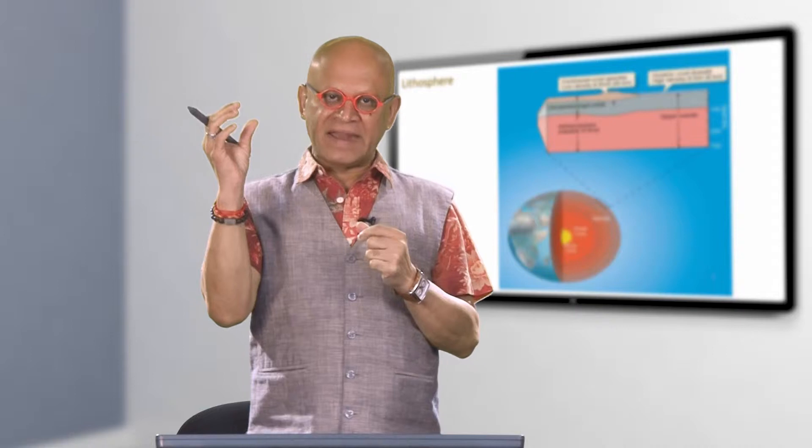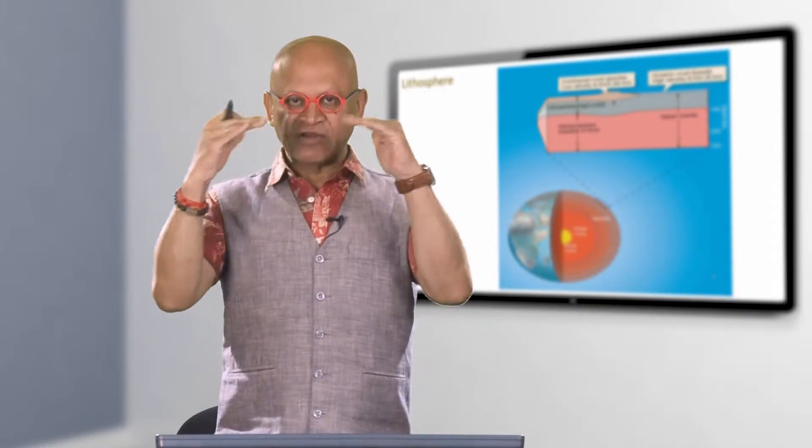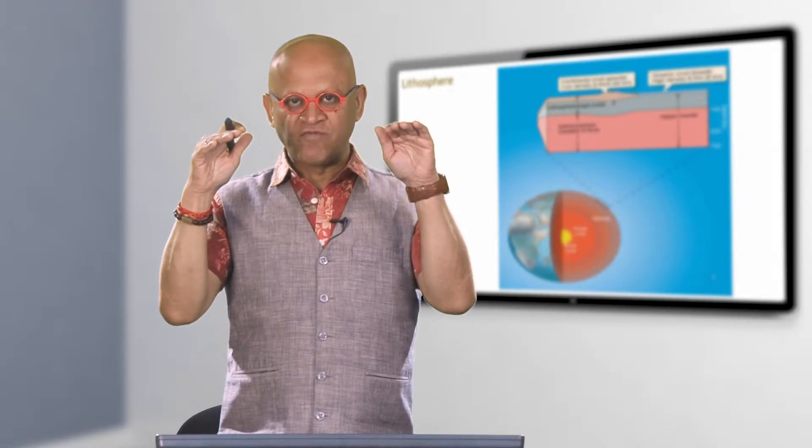The upper part of the mantle is the asthenosphere which is plastic, it can flow, and that is why the continents can move.